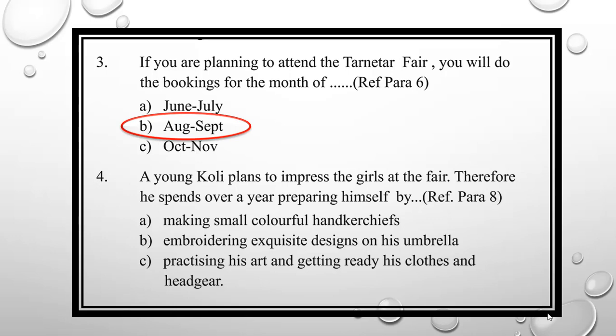The fourth question: 'A young Koli plans to impress the girls at the fair. Therefore he spends over a year preparing himself by...' Refer to paragraph 8. Options: A — making small colorful handkerchiefs; B — embroidering exquisite designs on his umbrella; C — practicing his art and getting ready his clothes and hat gear. The answer is B: embroidering exquisite designs on his umbrella.